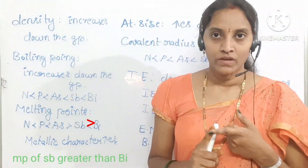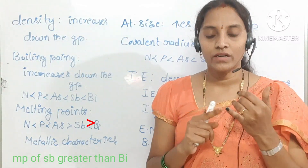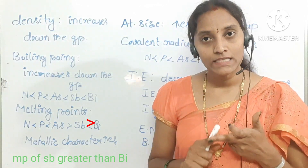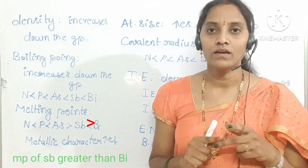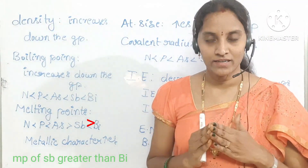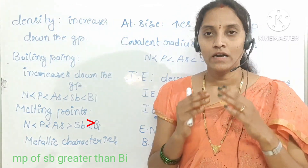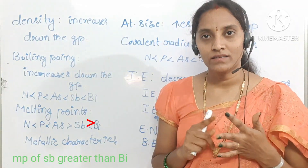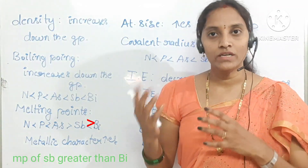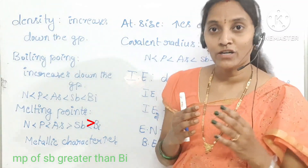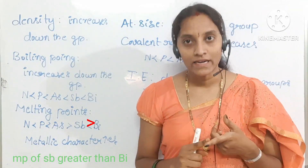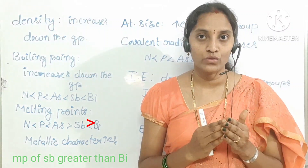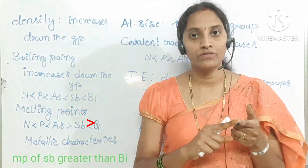For thermal and electrical conductivity: nitrogen and phosphorus are bad conductors of heat and electricity; arsenic is a poor conductor; antimony and bismuth are good conductors. Regarding allotropic forms: except nitrogen, all 5A group elements show allotropy. Phosphorus shows white, red, and black allotropic forms, and these will be discussed in detail during chemical properties. Like 4A group elements, 5A group elements also show catenation, though slightly less than 4A group elements.